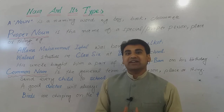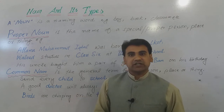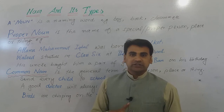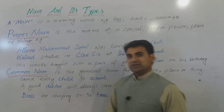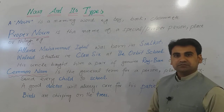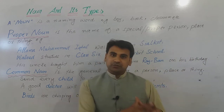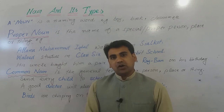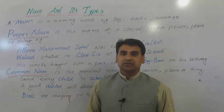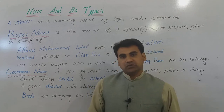So a common noun is the general term: a school is a place, a child is a person, birds are living things, trees are things. A proper noun is the name of a specific person, place or thing. On the contrary, a common noun is the general term for a person, place or thing. We will move towards other types of noun in the next video.